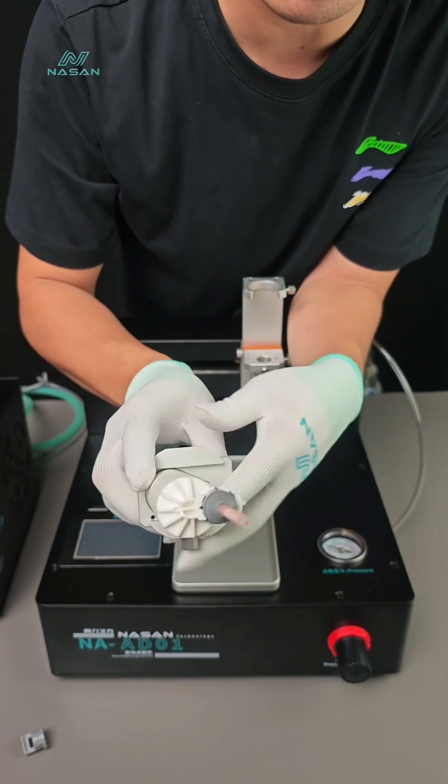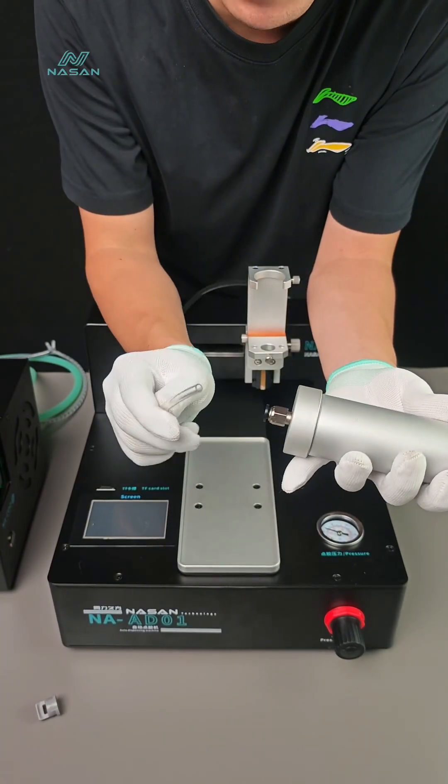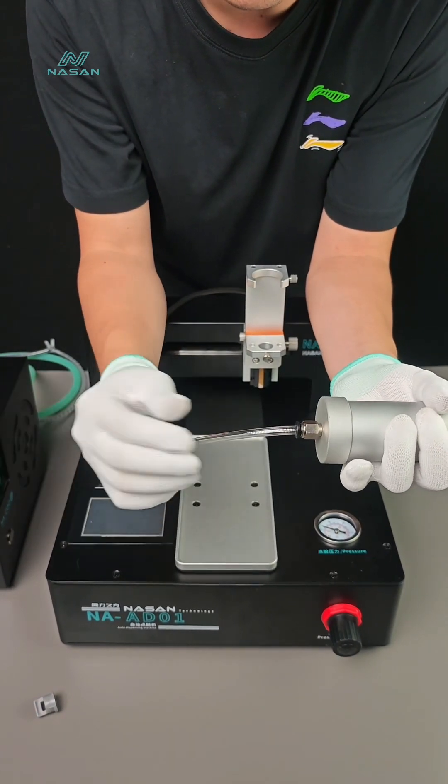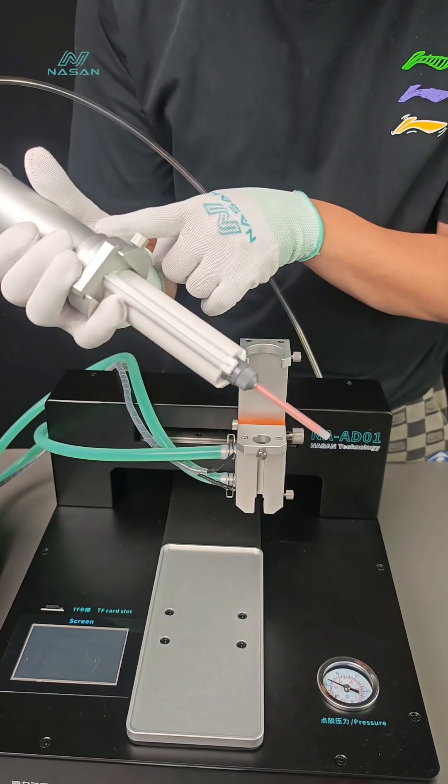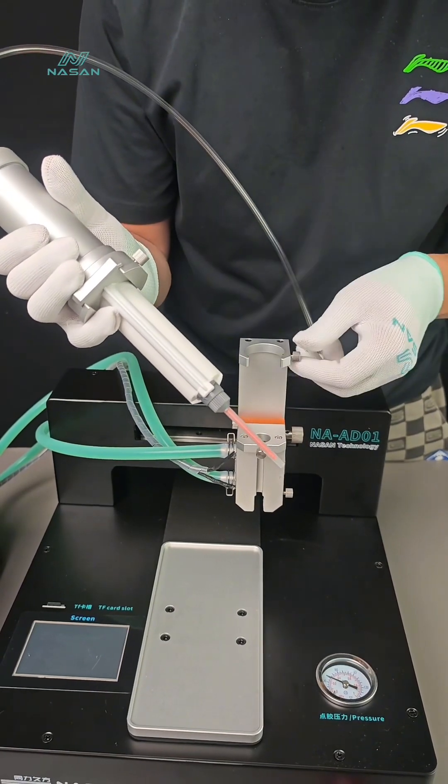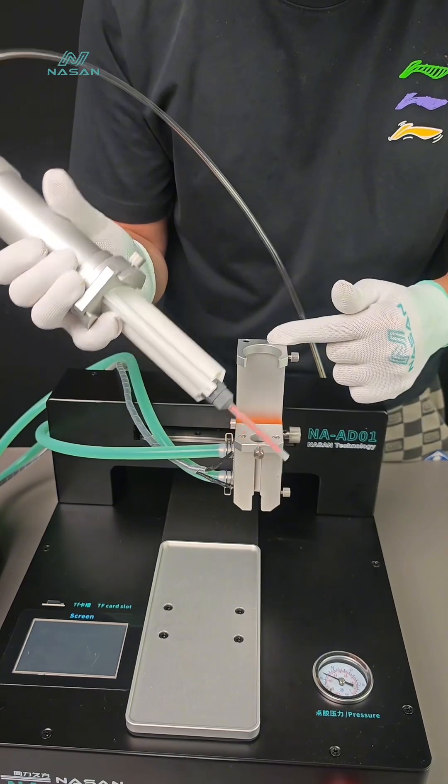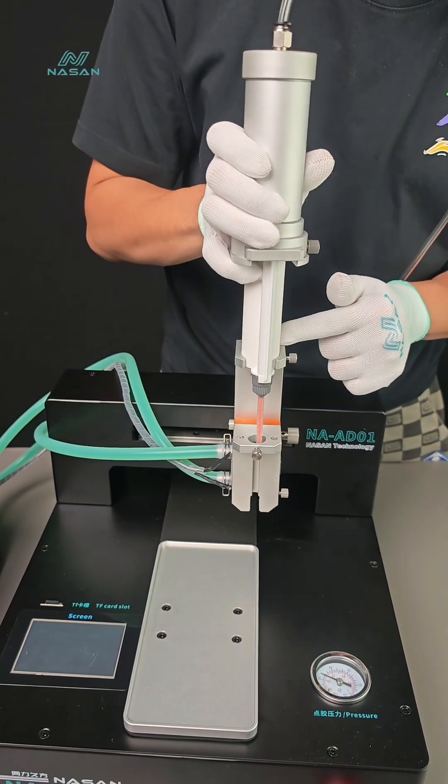This is installed. And connect it to the machine's holes. And let's install the AB glue barrel to the bracket. Loosen these two screws.